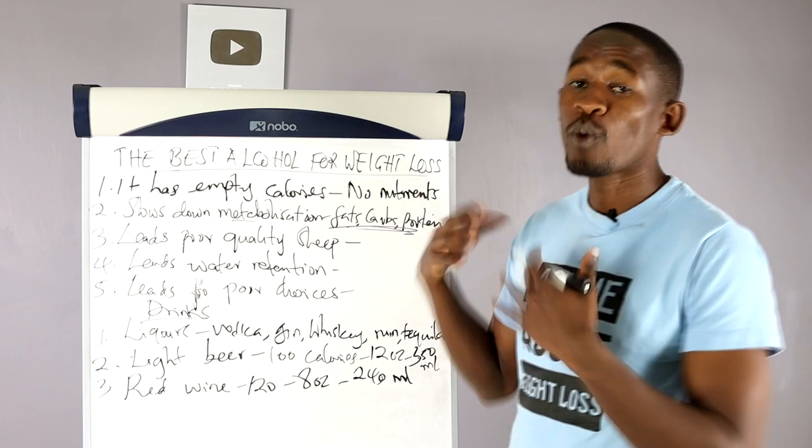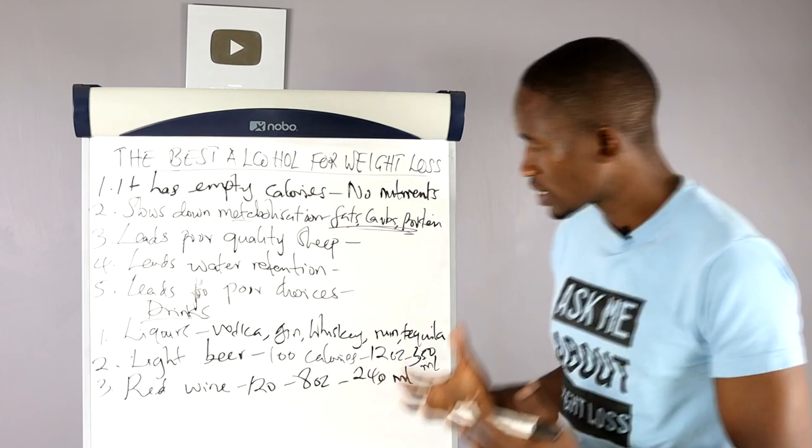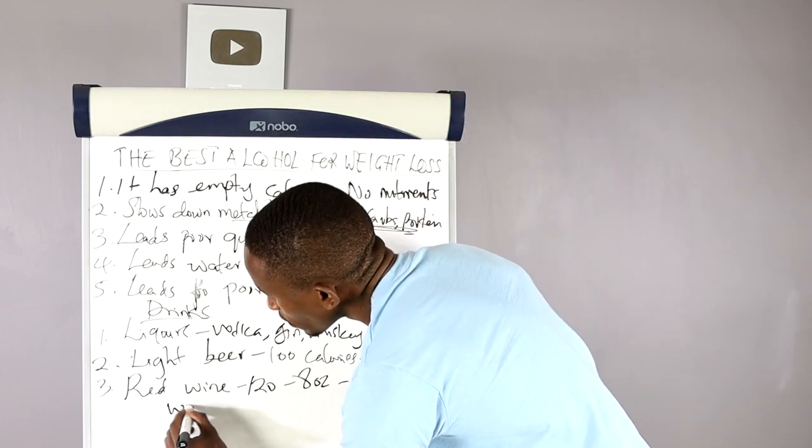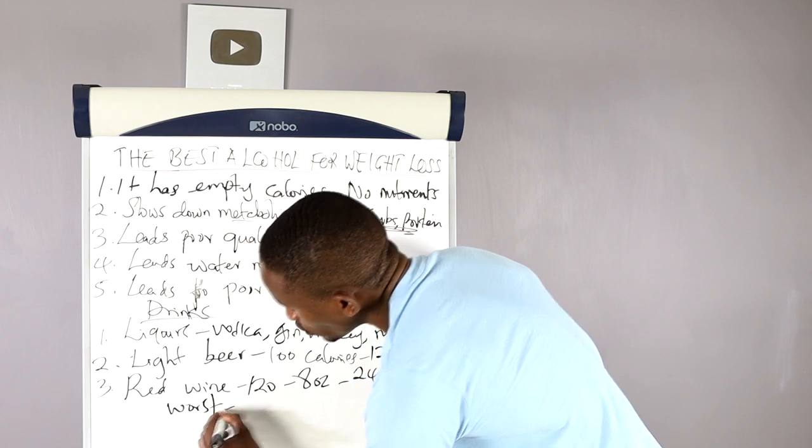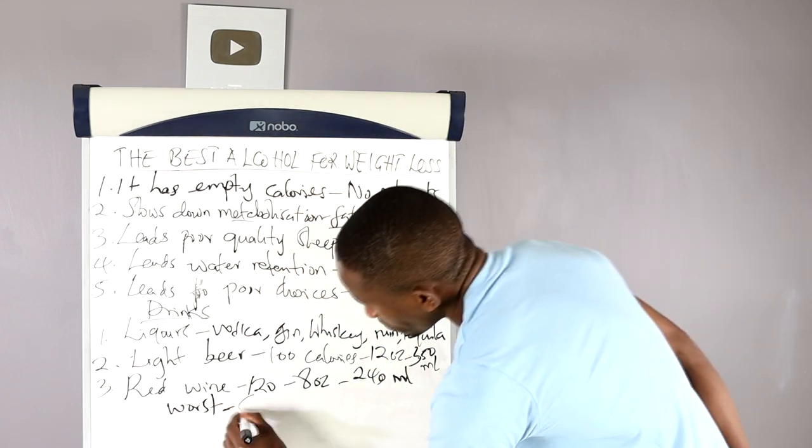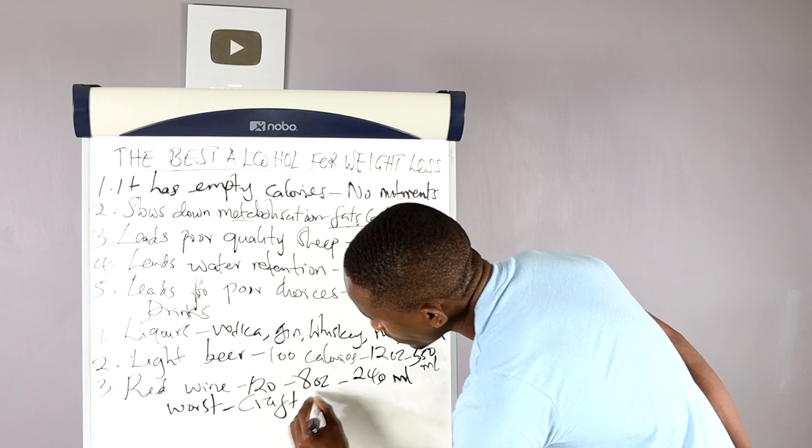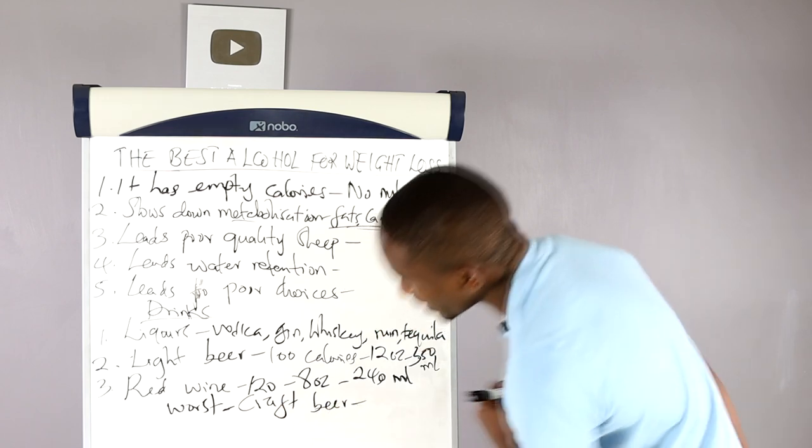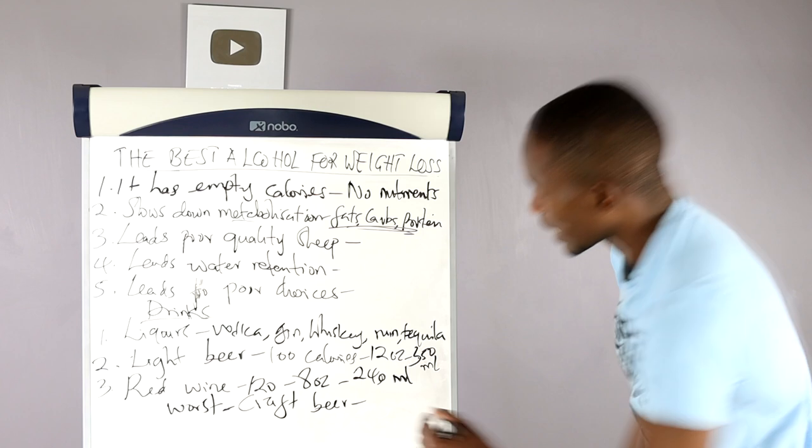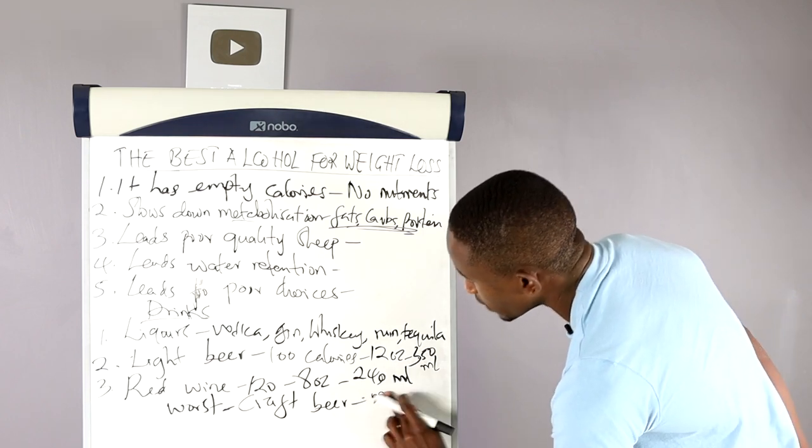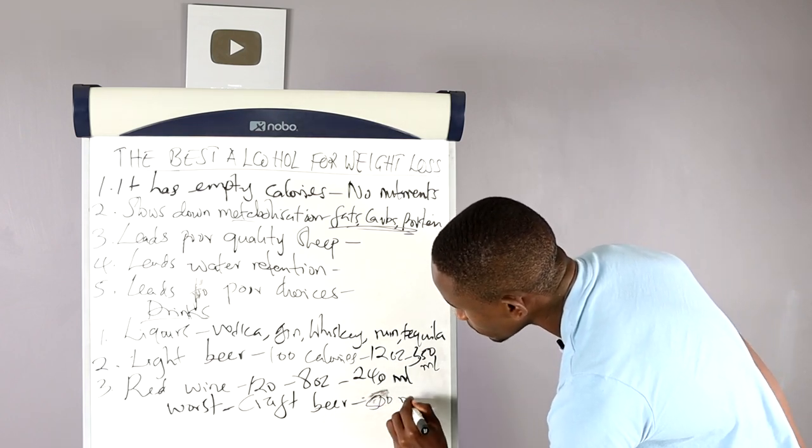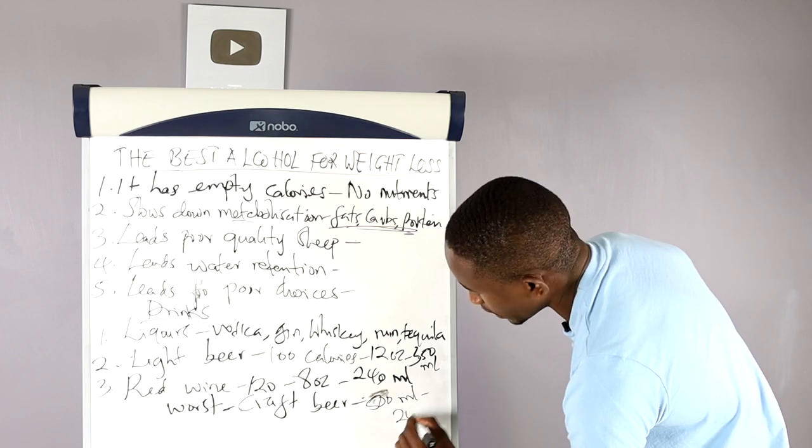So these are the three drinks that you need to take in order to be able to lose weight while drinking alcohol and enjoying yourself. Now what are the worst drinks to avoid? The worst drinks to avoid, there are actually only two categories. One is craft beer, because craft beer like 500 ml has over 200 calories.